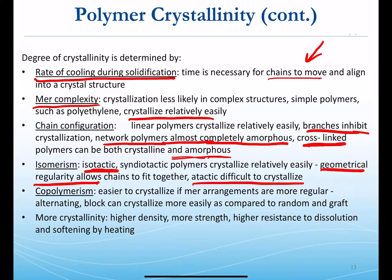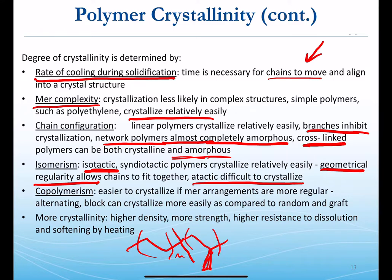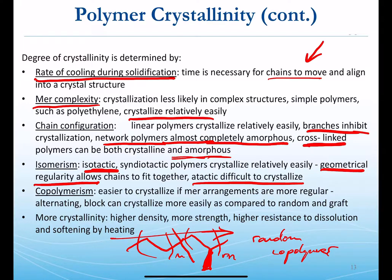Copolymerization also affects crystallinity. For example, a random copolymer of polyethylene with isotactic polypropylene — even though we have the right tacticity in the polypropylene, the fact that the methyl group occurs randomly as we go down the linear chain makes this copolymer very difficult to crystallize. Likewise, adding side chains that are chemically different from the main chain — grafting of other molecules to the side groups of a polymer chain — would prevent crystallization.